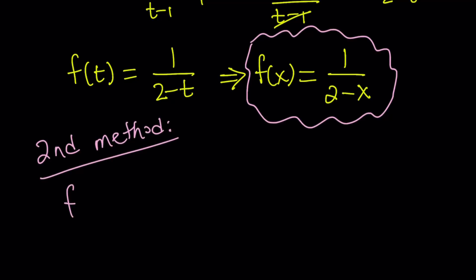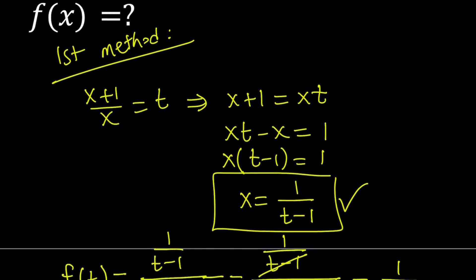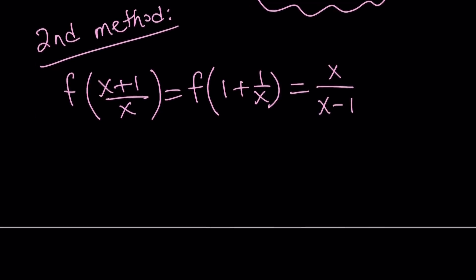For our second method we're going to modify the stuff inside the parentheses a little bit. So I'm going to write this as f of 1 plus 1 over x, so I'm going to basically separate them into two fractions. And then the right hand side, remember our expression was x over x minus 1, and I would like to write it the following way. Since we have 1 over x inside the parentheses, I want to divide everything by x on the right hand side.